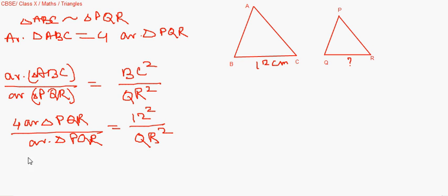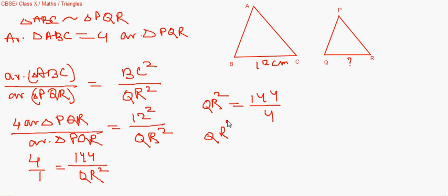So area of ABC can be written as four times area PQR by area of PQR. This is equal to now BC squared is 12 squared by QR squared. That means 4 by 1 is equal to 144 by QR squared. So QR squared, every time I'm writing O and then making it Q, I don't know why. QR squared is equal to 144 upon 4. QR will be equal to root over of 144 by 4.